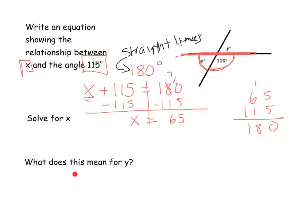So we solve for x. Now it's asking, what does this mean for y? Well, we can think of this in two different ways. y also forms a straight line with that 115. So since it forms a straight line with 115, we could do the same exact thing to find out that y equals 65 degrees as well. And the other way we could think about it is these are called vertical angles, because they're across from one another. So since they're vertical angles, we know vertical angles are congruent or have the same measure. So that is also how we could find this 65 degrees.